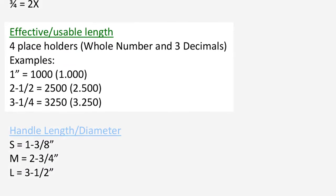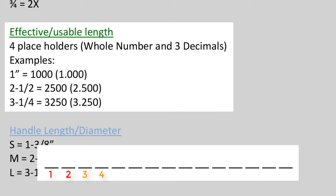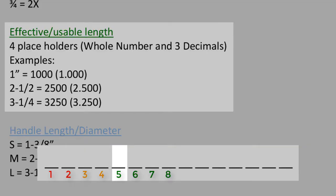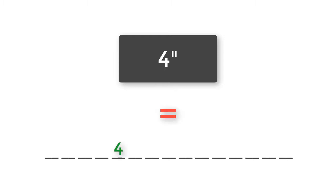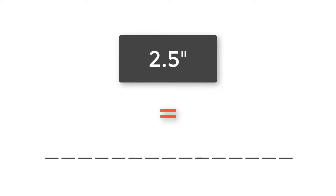Next, we move on to the green section called effective, usable, or grip length. There are four places allocated to this attribute located in spaces number 5, 6, 7, and 8 of the part code. The first digit is a whole number in space number 5 — imagine as if there is a period after the first whole number. Spaces 6, 7, and 8 are saved for any decimal places. If a pin is 4 inches in length, you would see 4-0-0-0 here. If a pin is 2.5 inches in grip length, you would see 2-5-0-0 here.